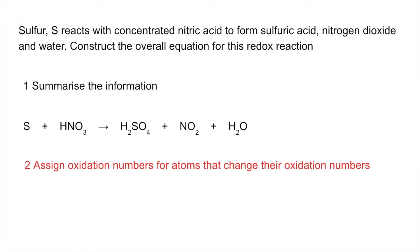Next step is to assign oxidation numbers for the atoms that change their oxidation numbers. So sulphur starts at zero, that's an element, it goes to plus six in the sulphuric acid. And the nitrogen in the nitric acid starts out at plus five and it drops to plus four in NO2.